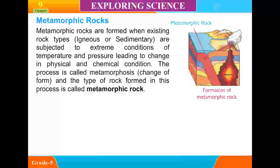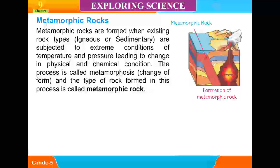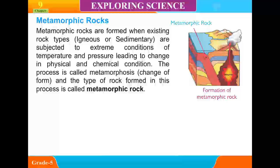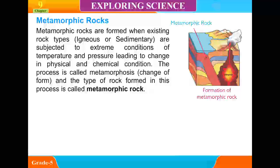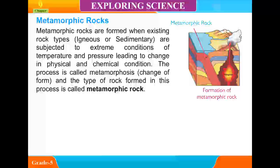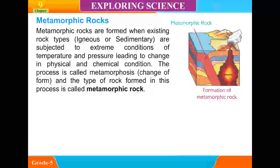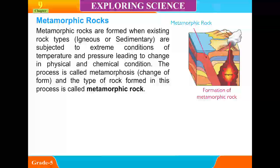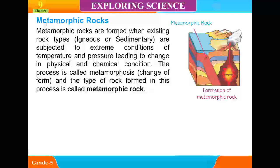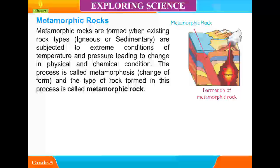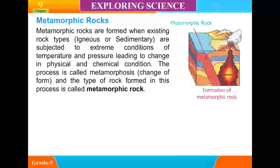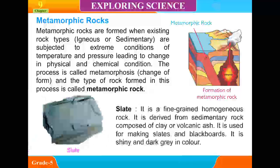Metamorphic Rocks. Metamorphic rocks are formed when existing rock types, igneous or sedimentary, are subjected to extreme conditions of temperature and pressure leading to change in physical and chemical conditions. The process is called metamorphosis — change of form — and the type of rock formed in this process is called metamorphic rock.